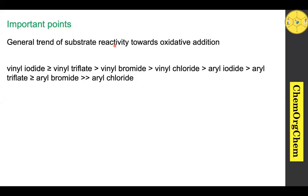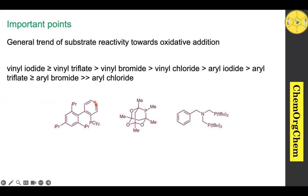Vinyl iodide is more reactive towards oxidative addition in Sonogashira cross-coupling. Aryl chloride is one of the poorest reactive substrates. However, when electron-rich phosphine ligands are used, reactivity towards oxidative addition can be boosted.